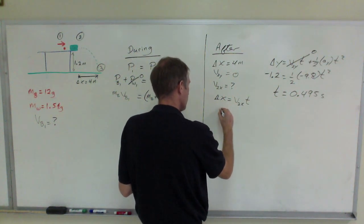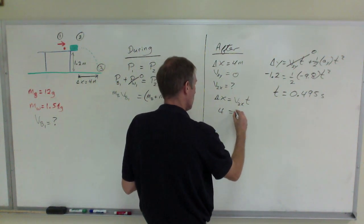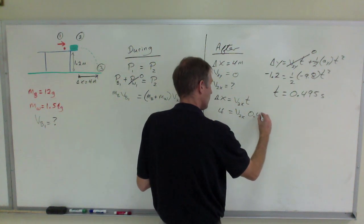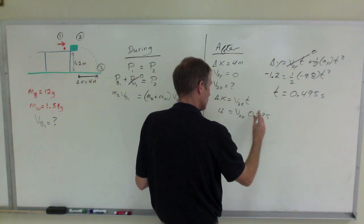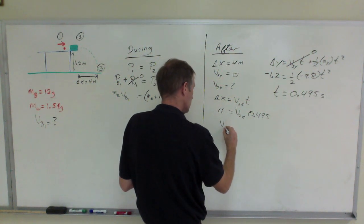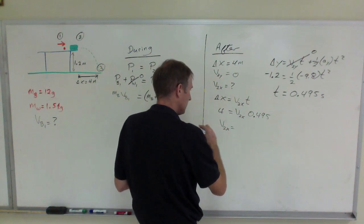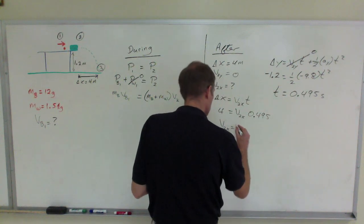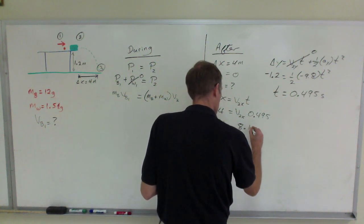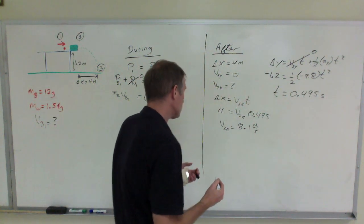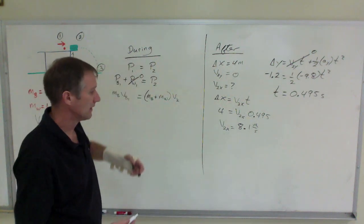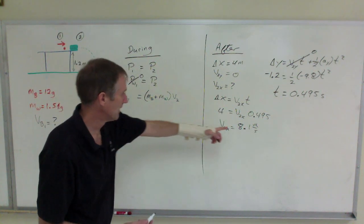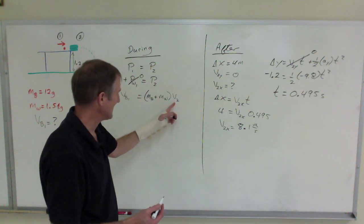Putting that in: 4 meters equals v2x times 0.495. Dividing both sides gives v2x equals 8.1 meters per second. Because the projectile is launched completely horizontally, that is the full v2 — 8.1 meters per second.